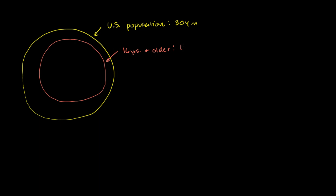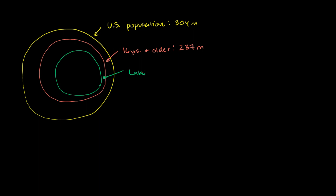The number I have here for the 16-and-older group is 237 million people. Now, we can't say all of these people could possibly work, because a lot of them are in college, some are in high school, some might not have the ability to work, some might be retired. So we want to take a subset of this population that is part of the labor force — meaning they are working or actively looking for work. This right over here is the labor force, sitting at around 154 million.